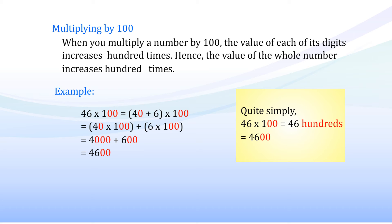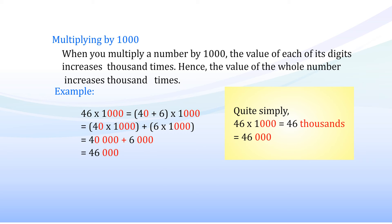Multiplying by 1000: when you multiply a number by 1000, the value of each of its digits increases 1000 times, hence the value of the whole number increases 1000 times. Example: 46 × 1000 = (40 + 6) × 1000 = (40 × 1000) + (6 × 1000) = 40,000 + 6,000 = 46,000.